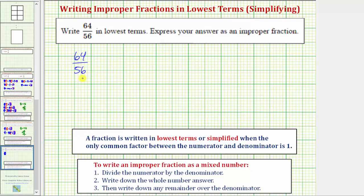Let's say we don't recognize the greatest common factor, but because both 64 and 56 are even, we notice they have a common factor of 2. Let's begin by dividing the numerator and denominator by 2. 64 divided by 2 equals 32, and 56 divided by 2 equals 28.